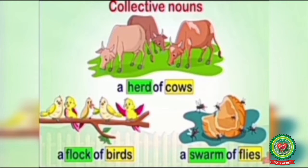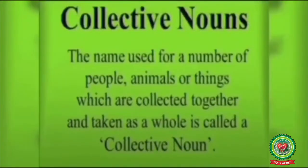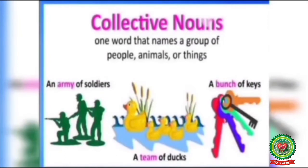So your Collective Noun means a group of something. The name used for a number of people, animals or things which are collected together and taken as a whole is called a Collective Noun. Means when you denote something as a group, that is your Collective Noun. So a Collective Noun is one word that names a group of people, animals or things.